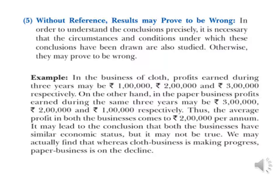For example, in the business of cloth, profit earned during 3 years may be 1 lakh, 2 lakh, and 3 lakh respectively. In the paper business, profit during 3 years may be 3 lakh, 2 lakh, and 1 lakh respectively. Average profit in both businesses comes to 2 lakh per annum, leading to the conclusion both have similar economic status. But cloth business is making progress while paper business is in decline. We need to study references very keenly, which proves results can be wrong.